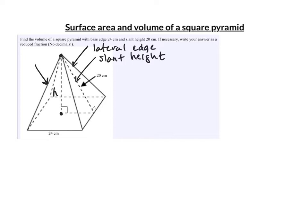Let's find the total surface area of this pyramid. We have four triangles. The base of each triangle is 24 — because the base is a square with side 24 — and the height of each triangle is the slant height, which is 20. The total area is four triangles, each being one-half times its base times its height: 4 × (1/2 × 24 × 20).